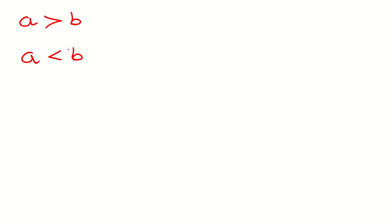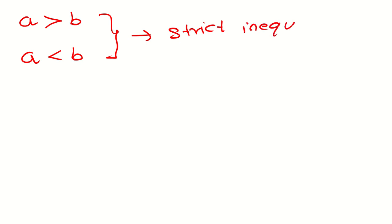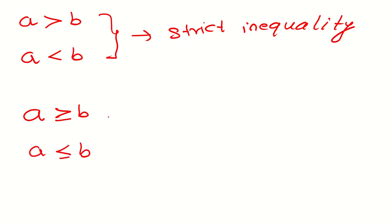There are four types of inequalities. If I say a is greater than b, or a is less than b, these two are called strict inequalities. Why? Because there is no equal to sign — it is just greater than or smaller than. But if I say a is greater than or equal to b, or a is less than or equal to b, then these two are simply called inequalities because we have the equal to sign also.